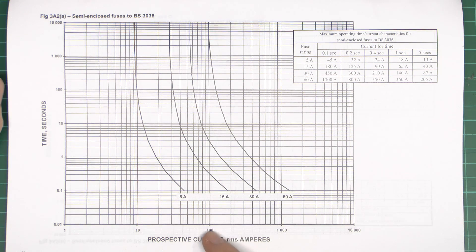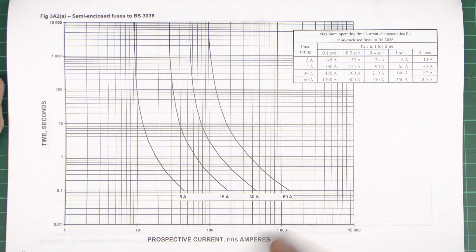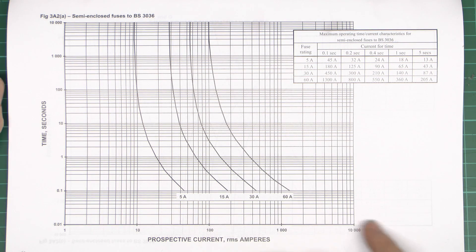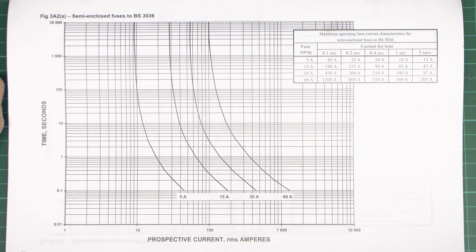The same thing repeats again — from the 100 mark onwards each square is now 100: so 100, 200, 300, 400, and so on. And then from the next point each square is 1,000: 1,000, 2,000, 3,000, and so on. So each section is basically 10 times greater than the previous one — pretty much the same deal as we saw on that graph previously with the coin prices.